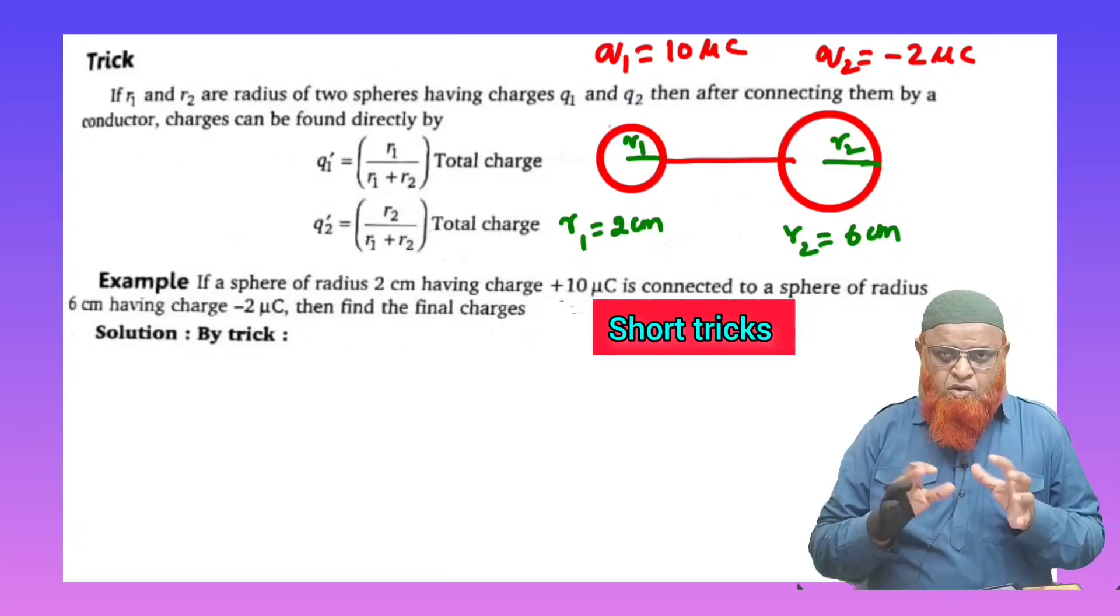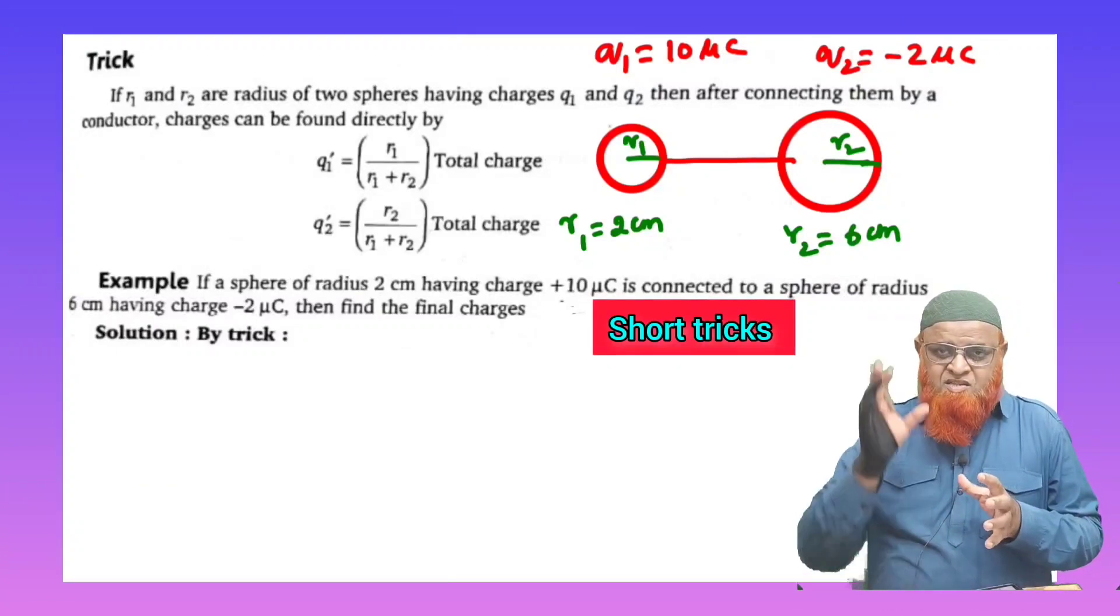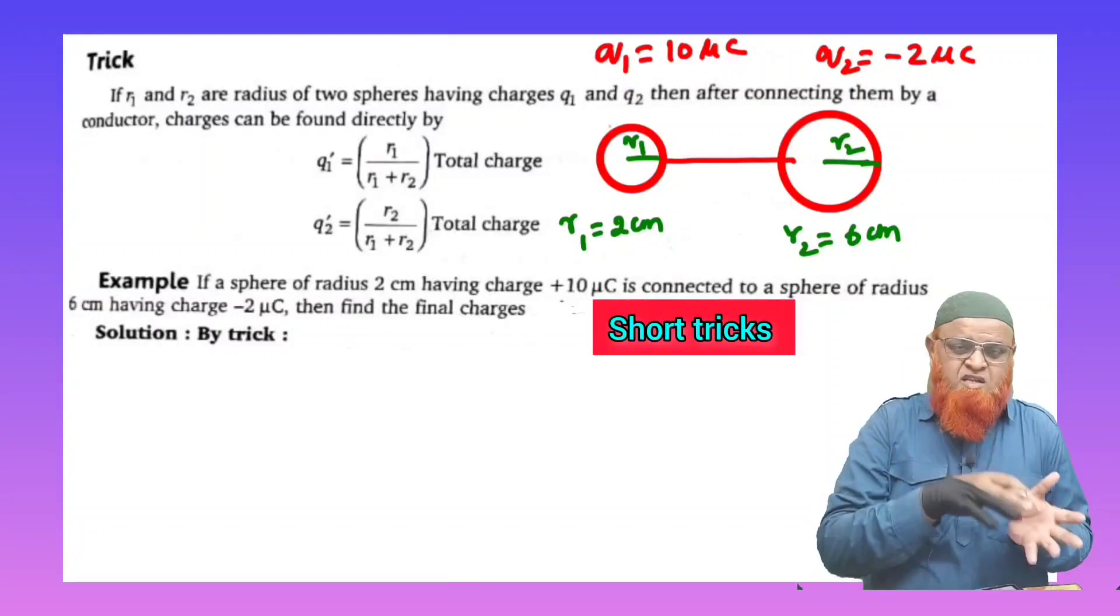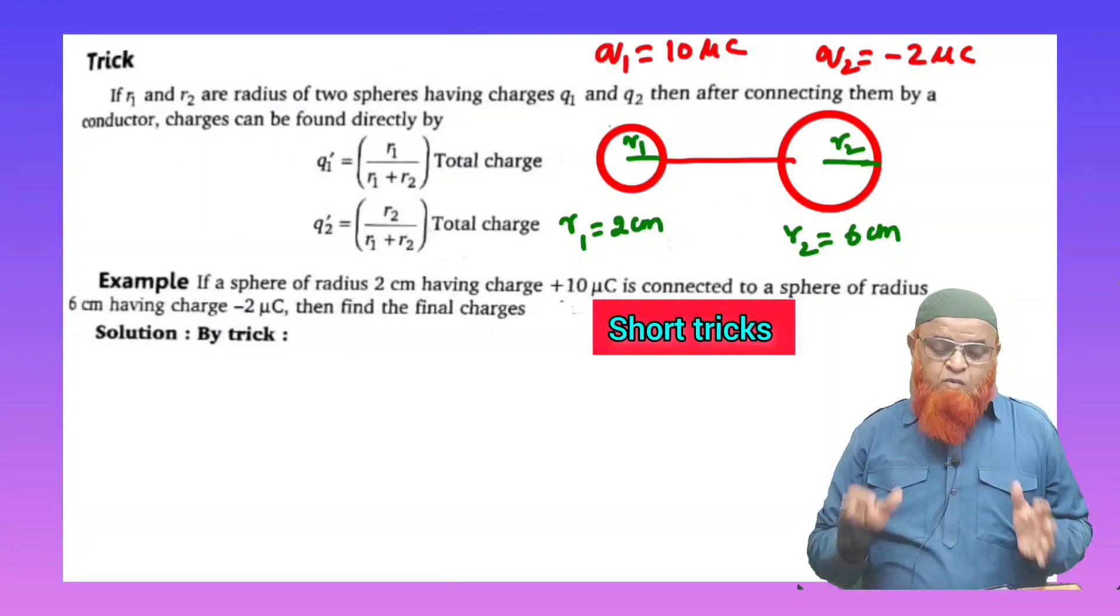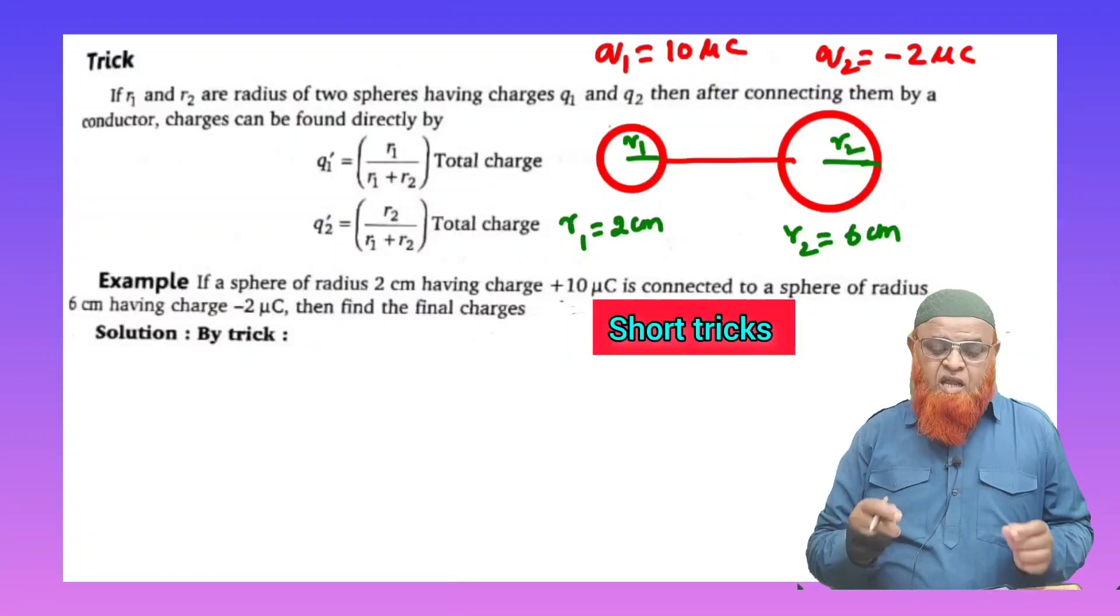When we connect with a certain thread, what is the final charge? You know charge distribution takes place. The charge moves from one sphere to another sphere depending upon the magnitude of the charge here.